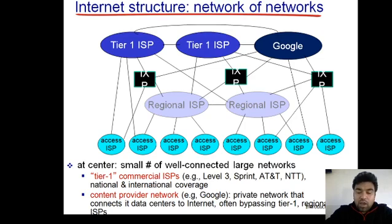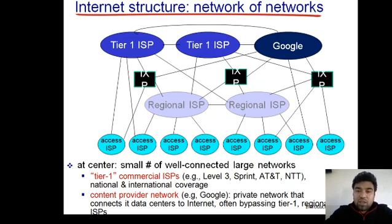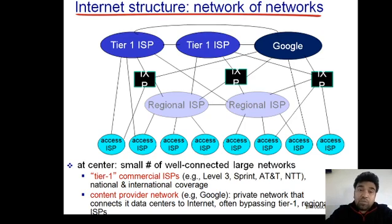NIXI's primary purpose is to facilitate the exchange of domestic internet traffic between peering ISPs, content players, and any other organizations with their own AS number — AS stands for Autonomous System. This enables more efficient use of international bandwidth, saving foreign exchange, and also improves quality of service for internet users by avoiding multiple international hops and thus reducing latency. Internet exchange points are used for exchanging information locally or within a country without using the services of tier 1 providers.